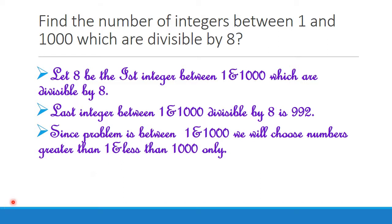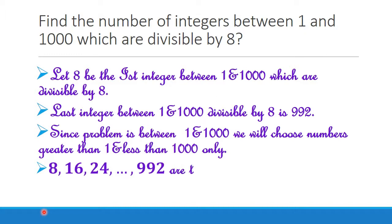Now, since we know the first integer is 8 and the last integer is 992, we can find the other integers too. It is quite easy because the first integer is 8, the next is 16, then 24 — they are at a difference of 8. So the terms are 8, 16, 24, ... , 992, all between 1 and 1000 and divisible by 8.